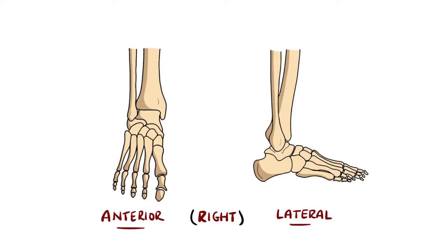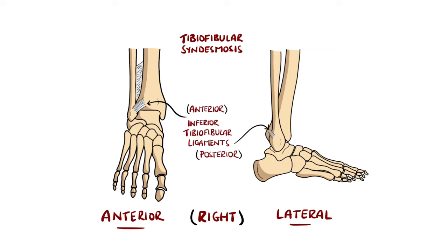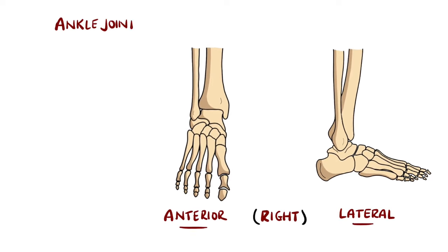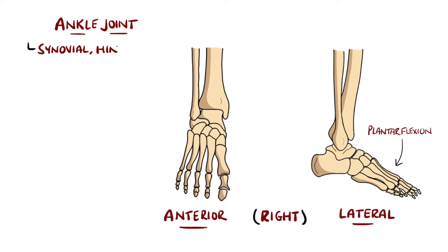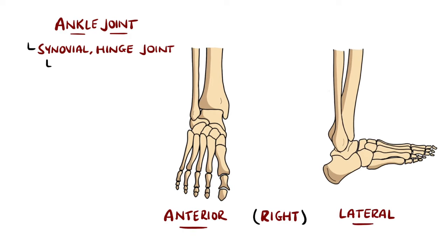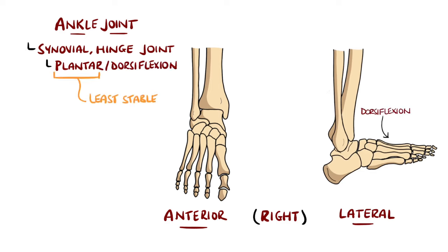There is an additional joint between the tibia and fibula called the tibiofibular syndesmosis. This is a fibrous structure made up of the anterior and posterior inferior tibiofibular ligaments and the interosseous membrane. The ankle is a hinge joint primarily allowing for plantar and dorsiflexion, and is at its least stable in plantar flexion.